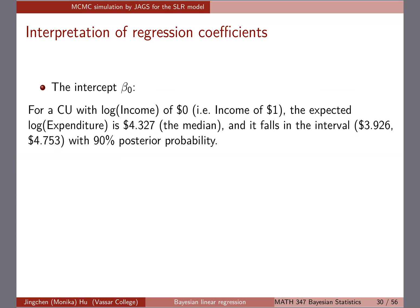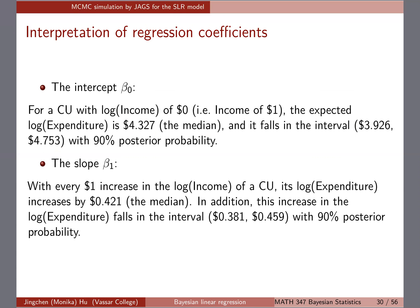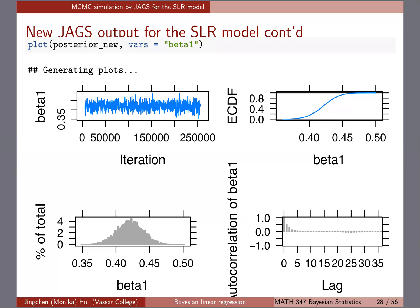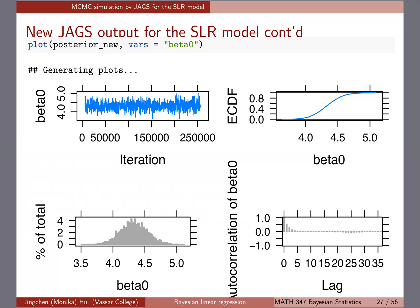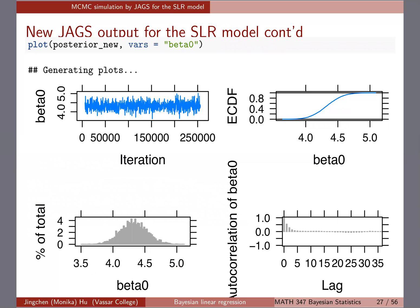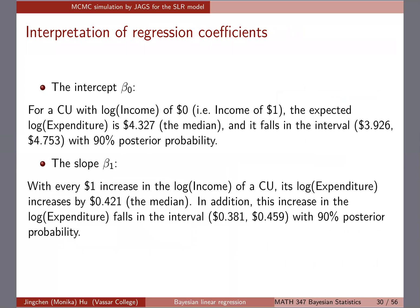Similarly for the slope beta_1: a one-unit increase in log income of the consumer unit is associated with a log expenditure increase of about 0.24 (the median), and that increase falls within this interval with 90% posterior probability. Sometimes we use the median instead of the mean to summarize. Looking at the posterior distribution histograms — they appear fairly symmetric, so you can use either the mean or median, just note which one you're reporting.